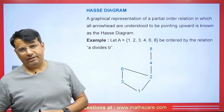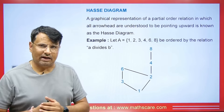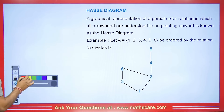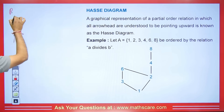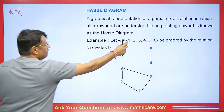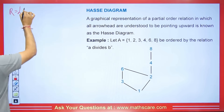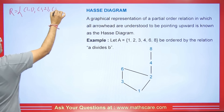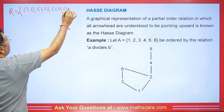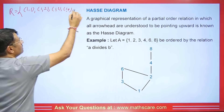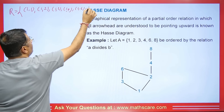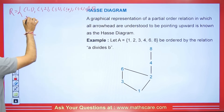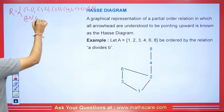Let's take an example to understand this Hasse diagram. Imagine we have a set containing numbers 1, 2, 3, 4, 6, 8, ordered by the divisibility relation — A divides B. So the relations are: 1 divides 1, 1 divides 2, 1 divides 3, 1 divides 4, 1 divides 6, and 1 divides 8.